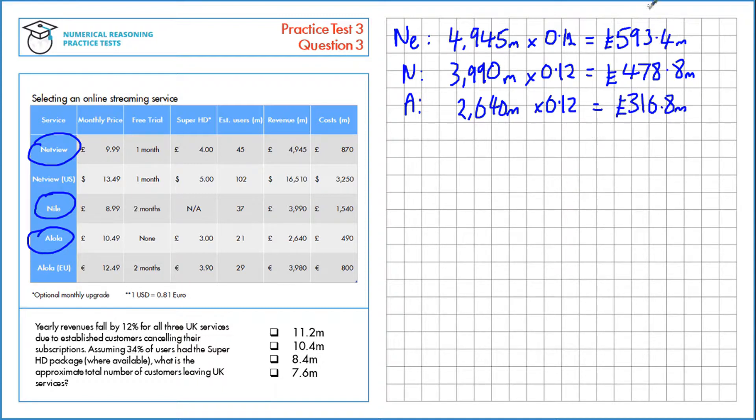Now that we have the revenue generated by the people that left, we need to calculate what an average user spends. So, let's find out the monthly fee for an average user. First, for Netview, an average user pays £9.99 in monthly price, and we know that 34% of these had the SuperHD package. So, I'm going to add on 0.34, that's 34% as a decimal, multiplied by the price of that package, so that's £4. This accounts for the 34% of people that got the SuperHD package.